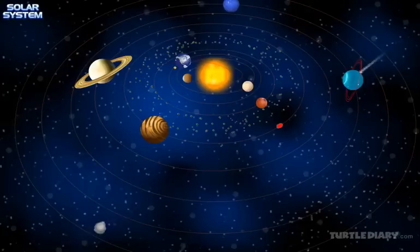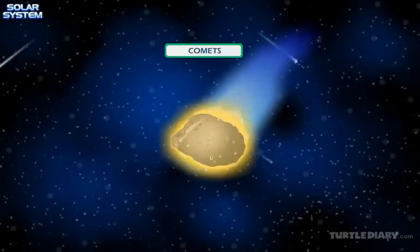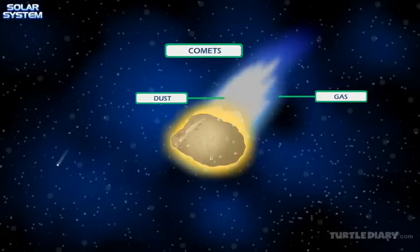As it moves closer to the sun, the glowing tails are visible. As comets heat up, gas and dust are expelled and trail behind them.